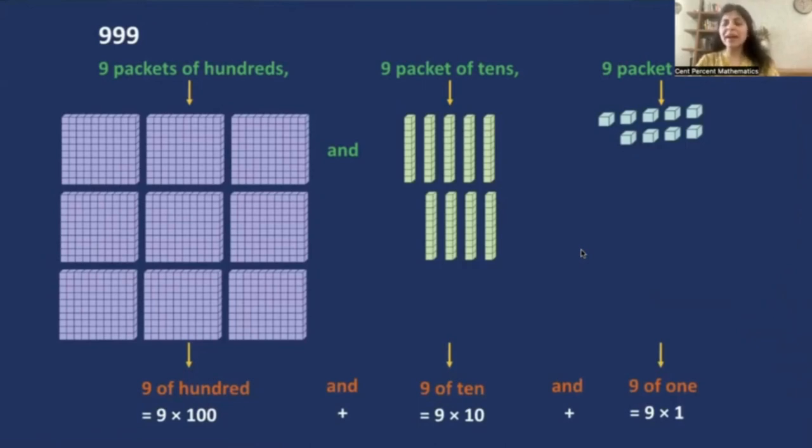We know that there are nine packets of hundreds. We know that there are nine packets of tens. And we know that there are nine packets of ones. When we add one here, when we add a packet here, one's packet here, it automatically becomes one tens.